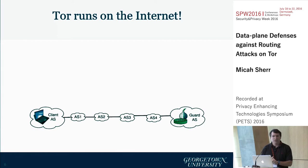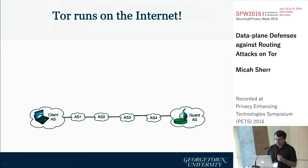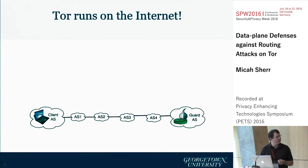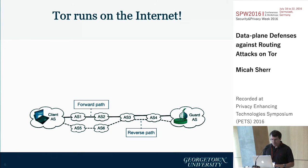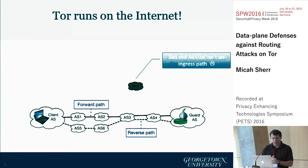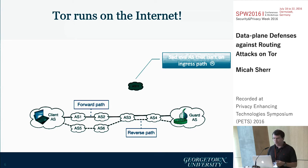In reality, TOR runs on the internet, which means that when you're looking at these traffic analysis correlation attacks, you need to consider the fact that there are a number of ASes — autonomous systems — between the client and the guard, and the forward path and the reverse path need not and often are not symmetric. This leaves an adversary who's not on that path in a very unfortunate position — a sad adversary who really wants to enumerate who the client is, but it's not on the ingress path.